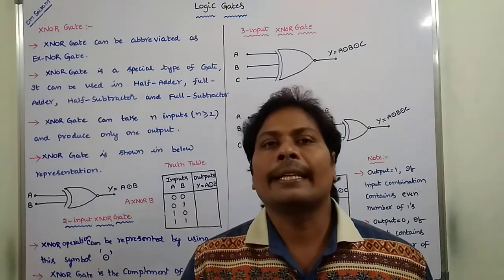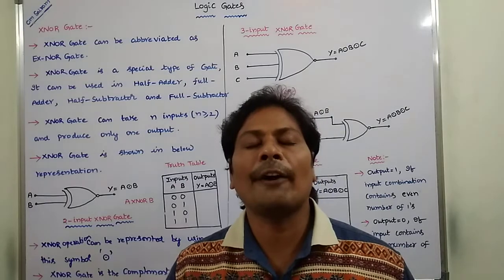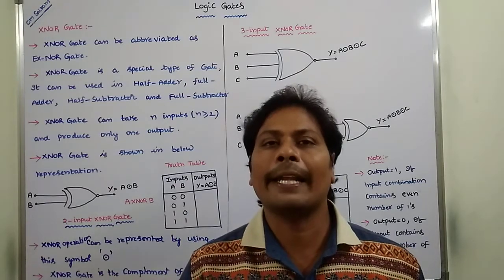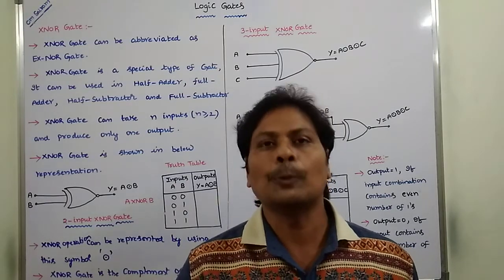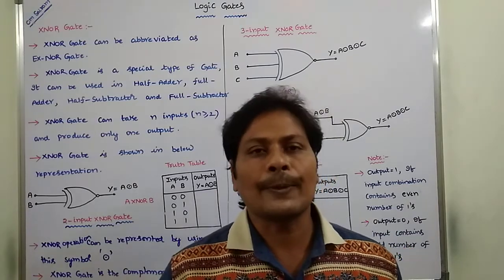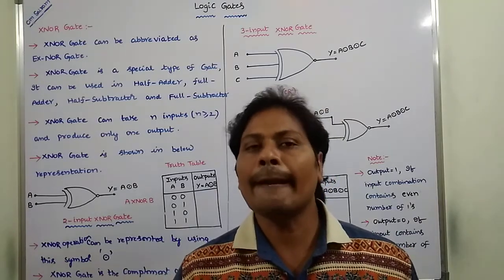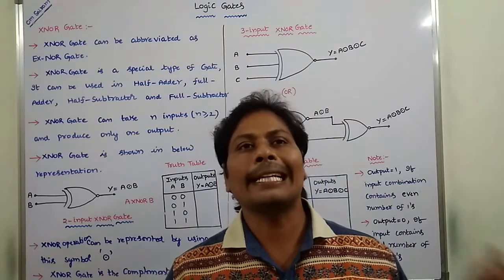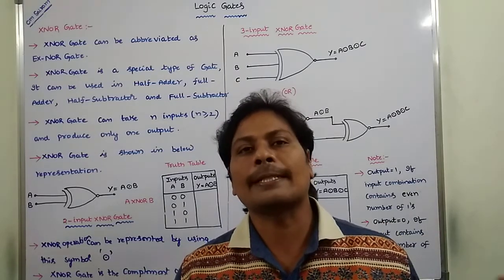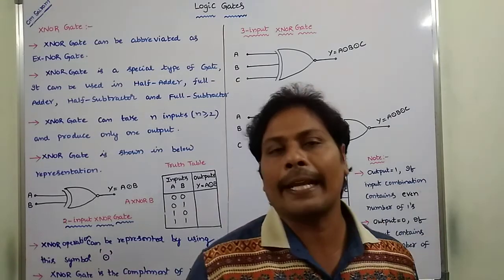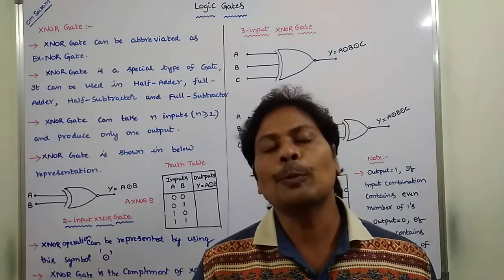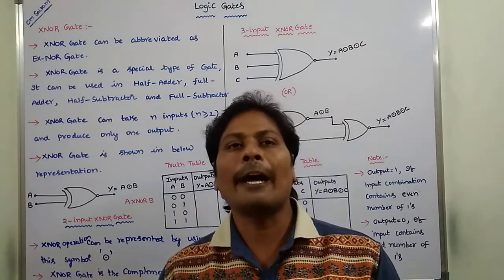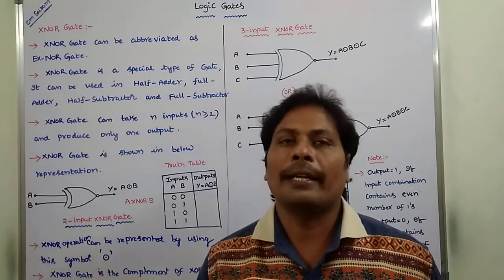XNOR gate can take N number of inputs, where N is greater than or equal to 2, and it can produce only one output.